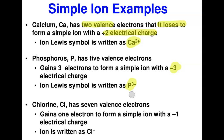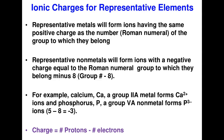Chlorine is in group 7A and needs just one more electron to fill its valence shell, so it gains one electron to form Cl⁻. When writing the symbol of simple ions, by convention you do not need to draw all the dots — the shorthand is just the symbol with the charge superscript. The full dot structure and the shorthand symbol represent the same thing.